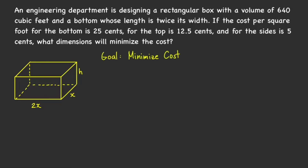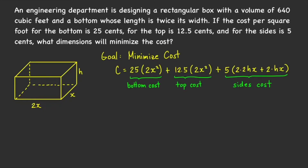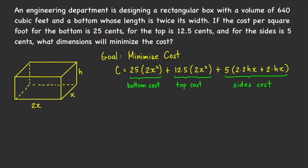The goal of this problem is to find the minimum cost. We're given different costs per square foot: 25 cents for the bottom, 12.5 cents for the top, and 5 cents for the sides. The area of the bottom is 2x times x, which equals 2x². Since the cost is 25 cents per square foot, the cost for the bottom is 25 times 2x².